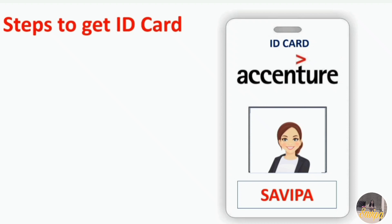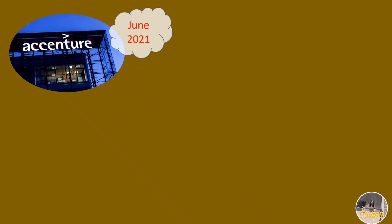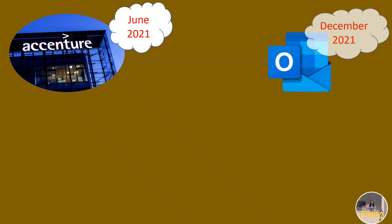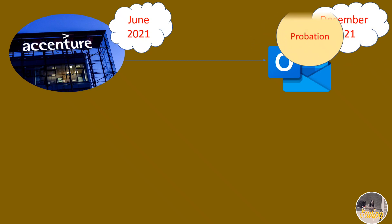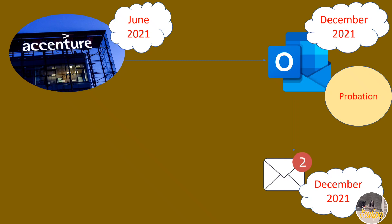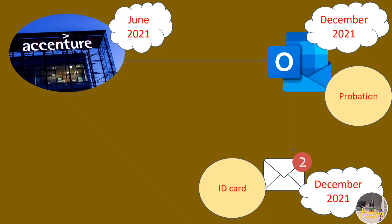The procedure for the ID card will be the same; the access card is an extra thing you get nowadays. My personal experience: I joined in June 2021, and after six months, in December 2021, I received a mail in Outlook saying my probation period had been completed and I am now a permanent employee of Accenture. In the same month, after a few days, I received another mail regarding my ID card.